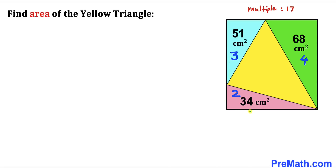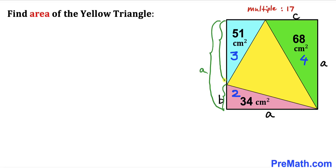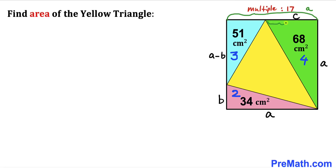Let's label the side lengths of the square. I'll call the full side length lowercase a. Then this side length is also a. I'll label this side length as lowercase b and this one as lowercase c. Since the whole side is a and this portion is b, the remaining side of the blue triangle is a minus b. Likewise, since the whole side is a and this portion is c, the remaining side is a minus c.